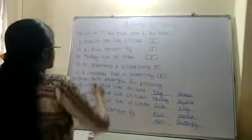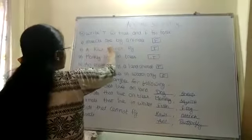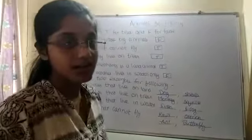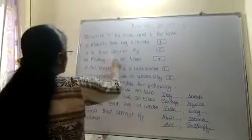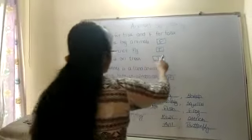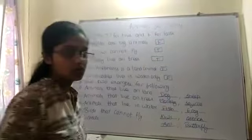Let's repeat that. Insects are not the biggest animal — they are the smallest animal, so false. Kiwi cannot fly — true.